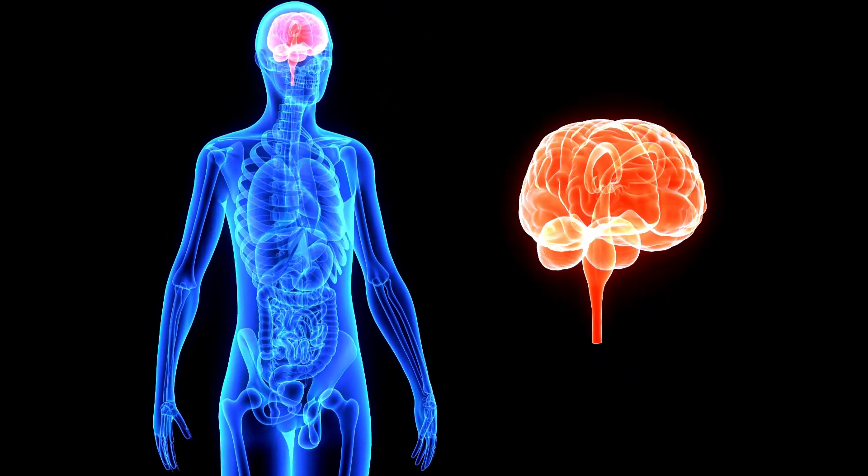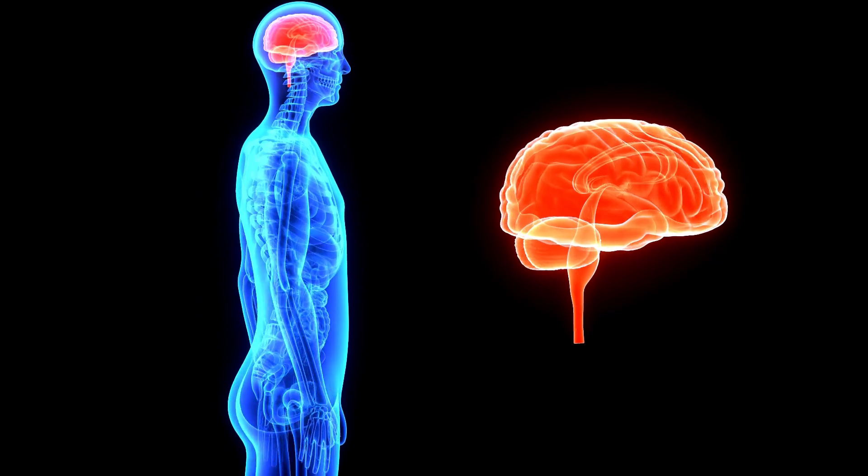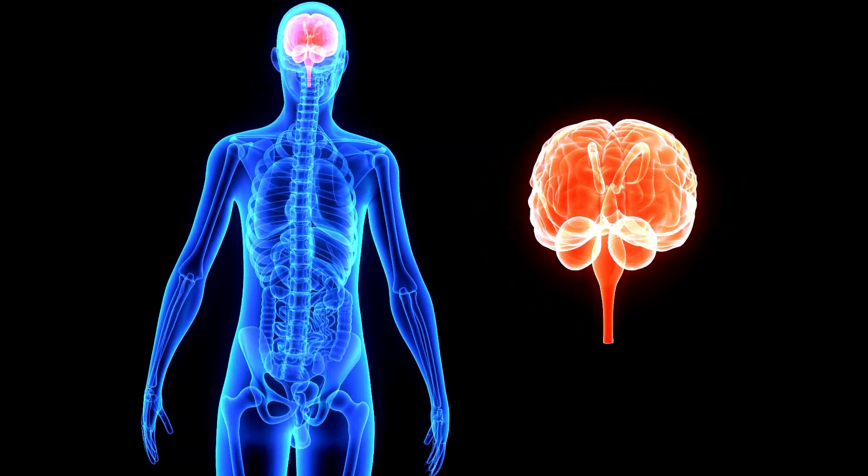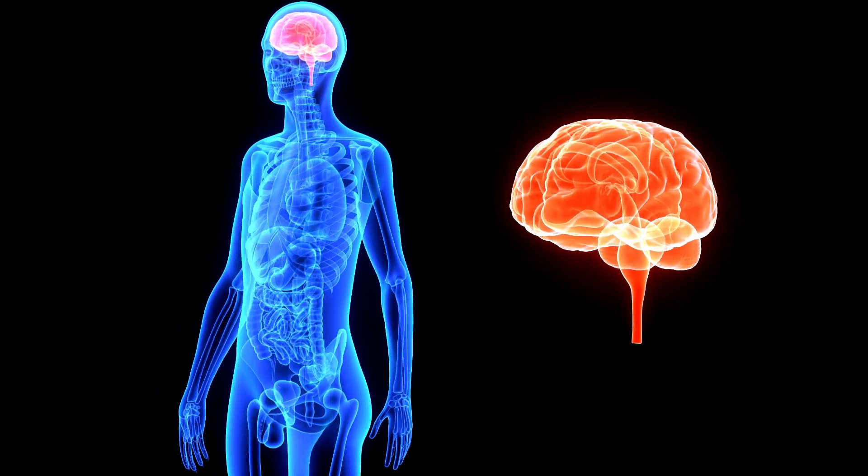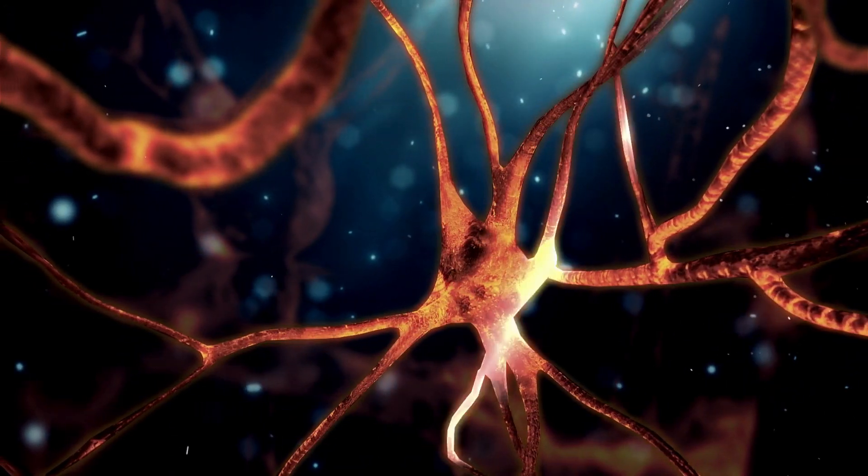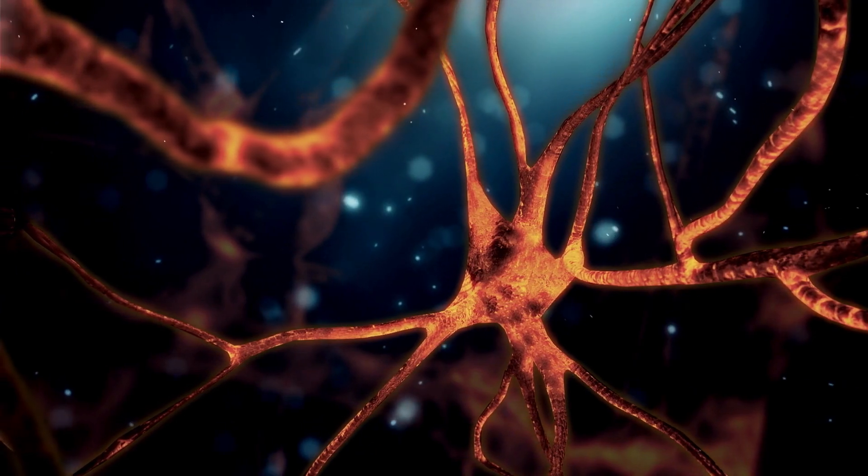The thalamus and basal ganglia, which have been linked to neurological and psychiatric conditions such as Parkinson's disease, Tourette's syndrome, and obsessive-compulsive disorder, connect different parts of the brain.